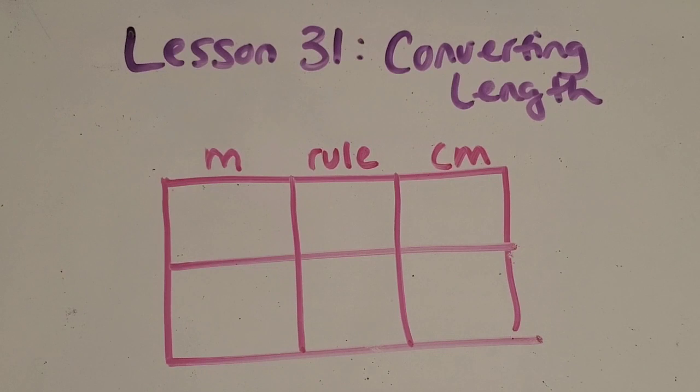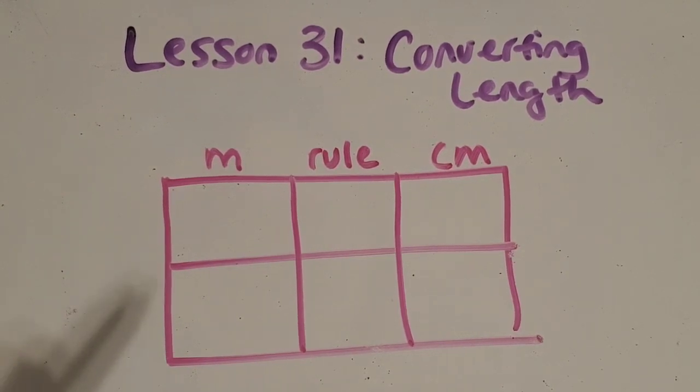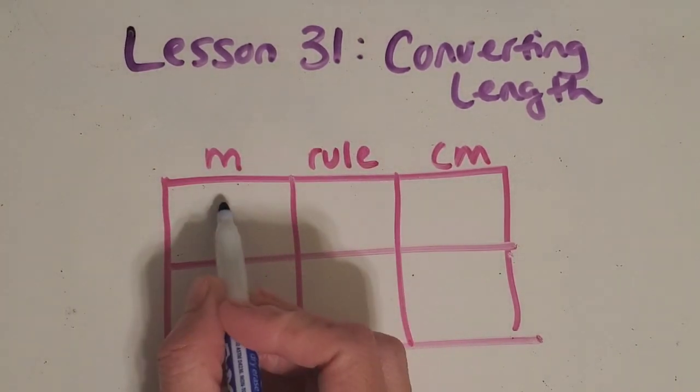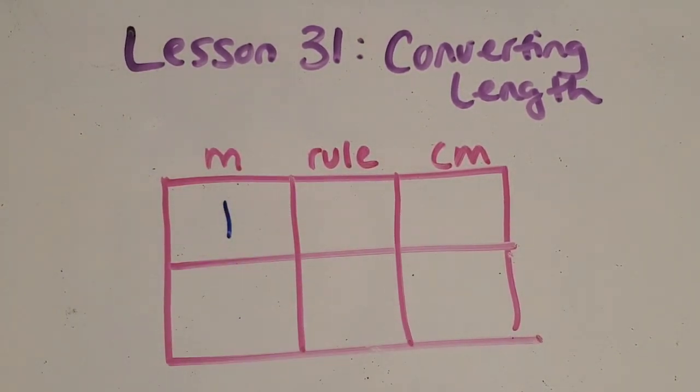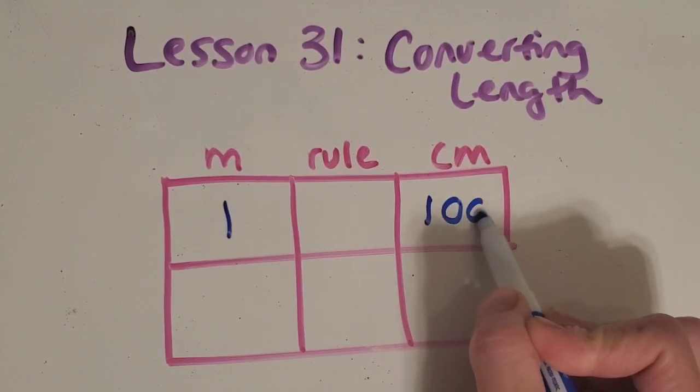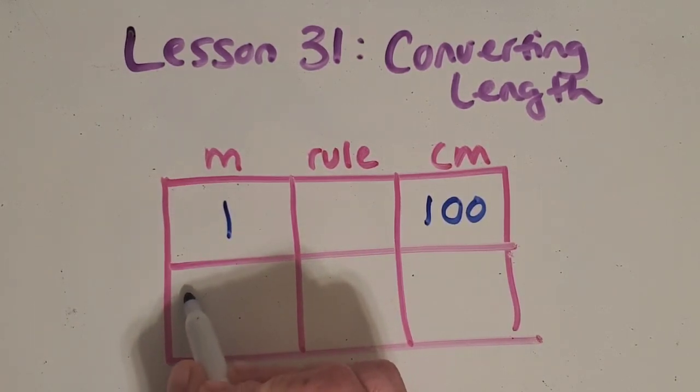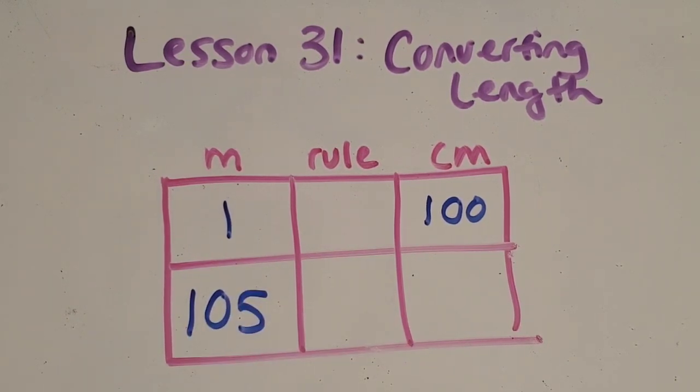All right so let's use the same strategy we used for the last problem. But this time we're going from meters to centimeters. And we know that in one meter there are 100 centimeters. And you can always look these up anytime you're doing a conversion problem. You can always look up the information that you need and then it can help you find the rule and then find the information that they're trying to get you to find.